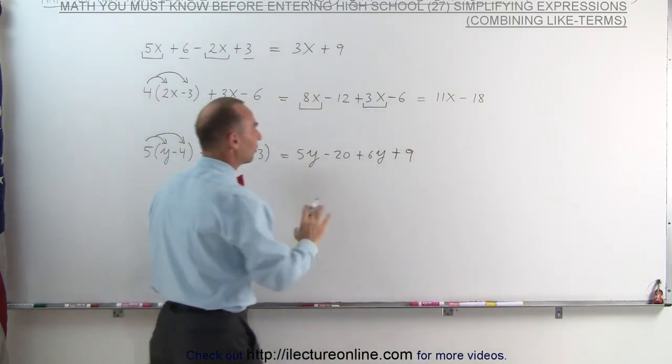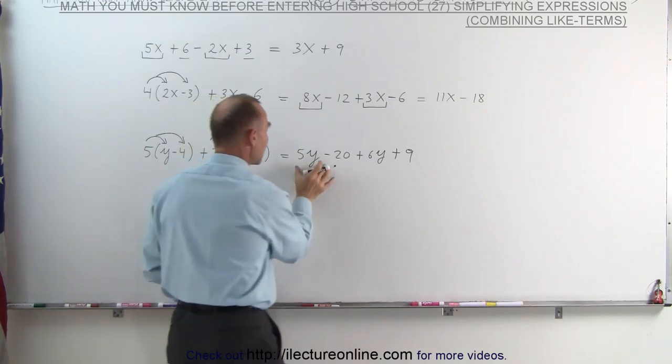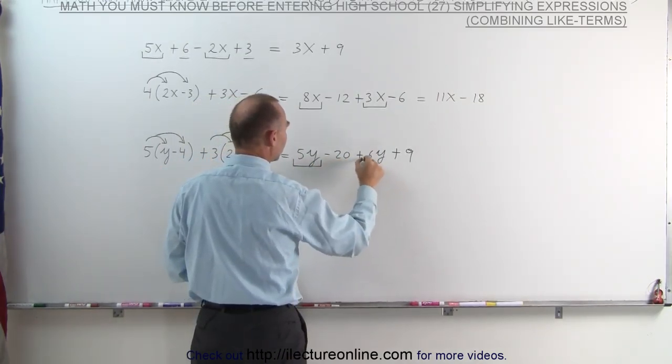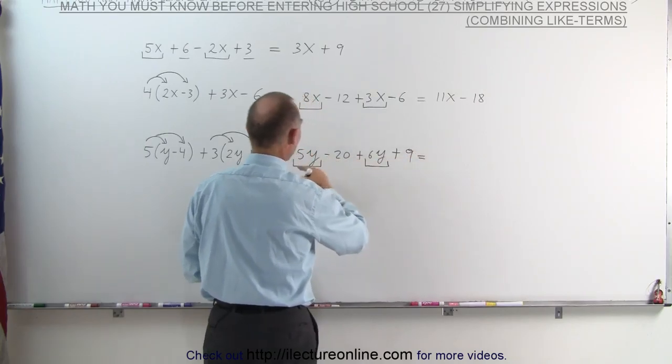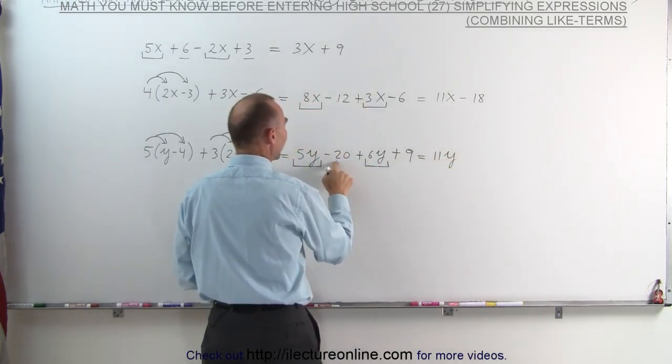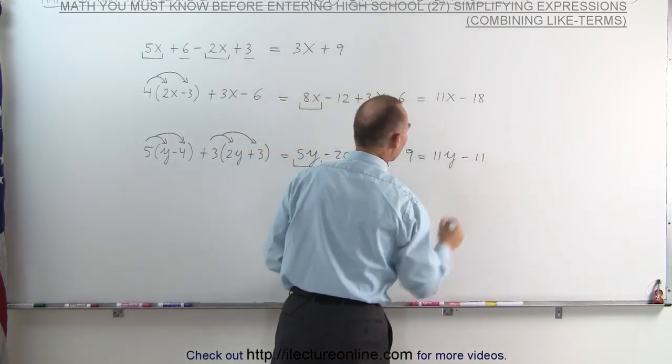Now that we have gotten rid of the parentheses, let's combine like terms. Here are two like terms. The letter parts are the same. We can add those two together. This becomes 5y plus 6y is 11y. And minus 20 plus 9 is minus 11.